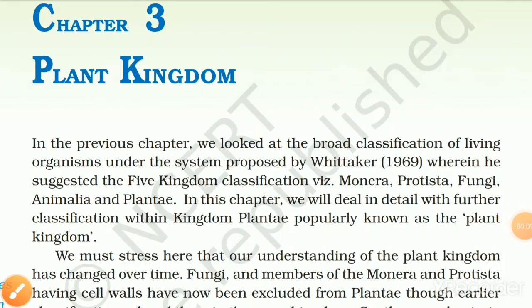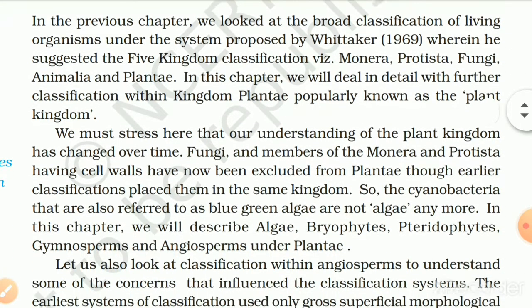Chapter 3: Plant Kingdom. In the previous chapter, we looked at the broad classification of living organisms under the system proposed by Whittaker 1969, wherein he suggested the five kingdom classification: Monera, Protista, Fungi, Animalia and Plantae.